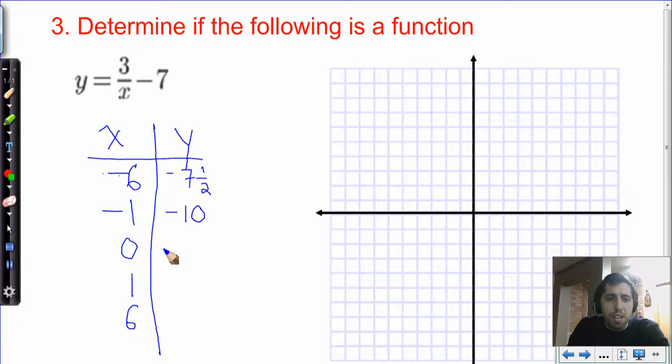Zero. 3 divided by 0. Oh, goodness. That's undefined. We can't graph that. You can't ever divide by 0. Bad things happen. What about 1? 3 over 1 is 3. 3 minus 7 is 4. And 6. 3 divided by 6 is 1 half. 1 half minus 7, 1 half plus negative 7 is negative 6 and a half.